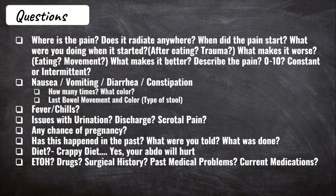Ask if this has ever happened before, because patients are sometimes already diagnosed with something but don't mention it until explicitly asked. Also ask about alcohol use, as it puts patients at an increased risk for liver and pancreatic issues, cancer, ulcers, and a plethora of other problems. As with any ER patient, ask about past medical history, surgical history, drug use, smoking history, and current medications. Remember that chronic NSAID use places patients at an increased risk for stomach ulcers.